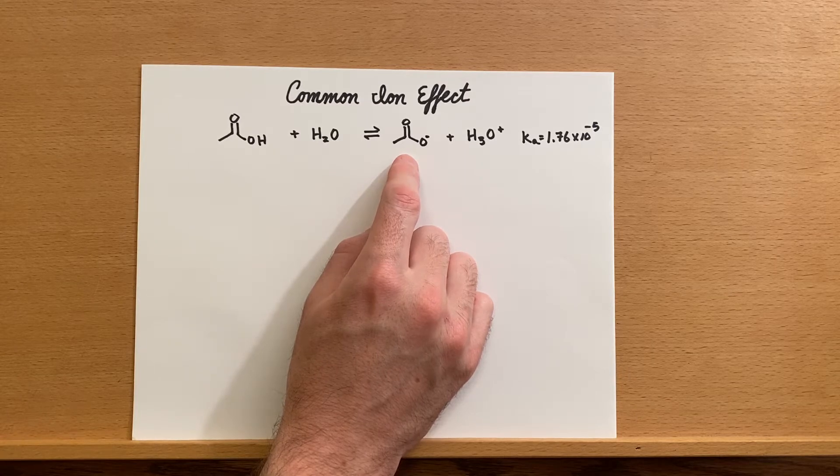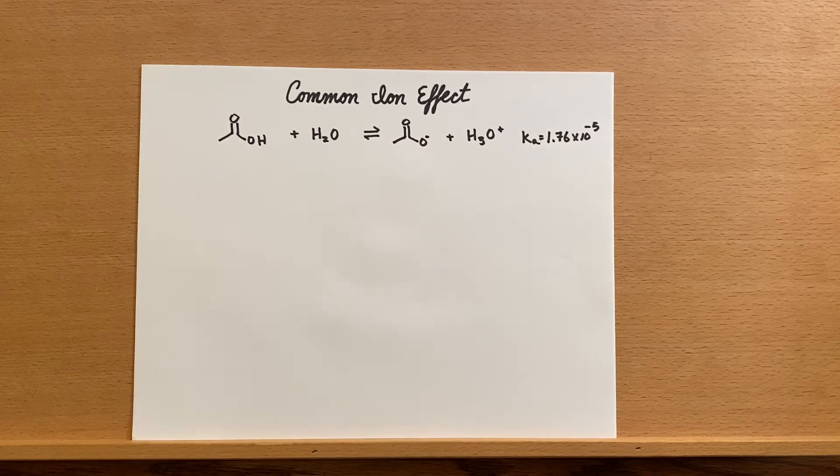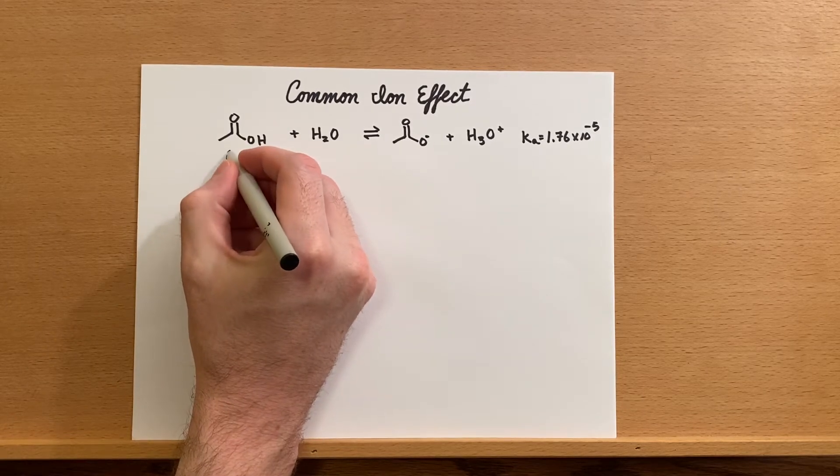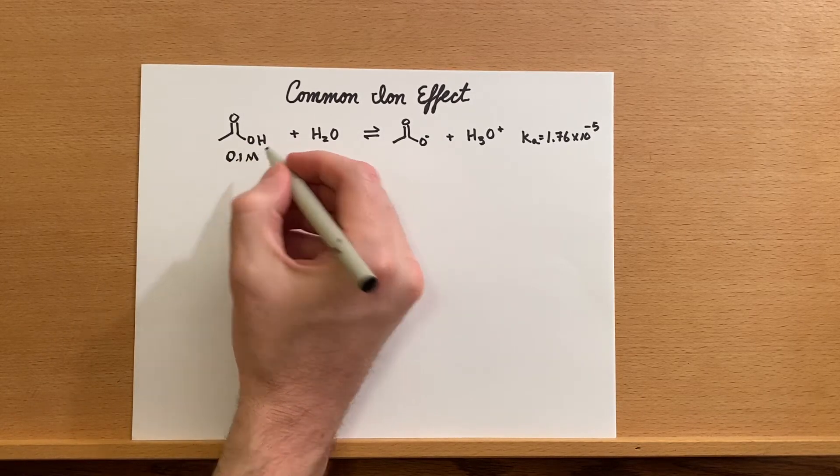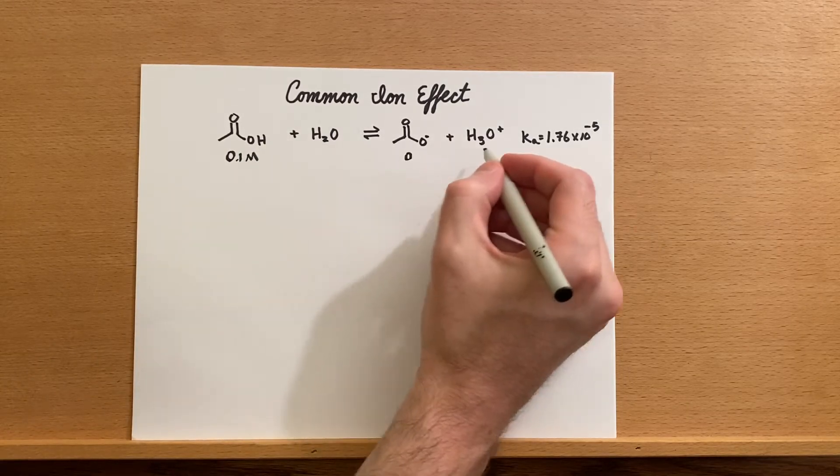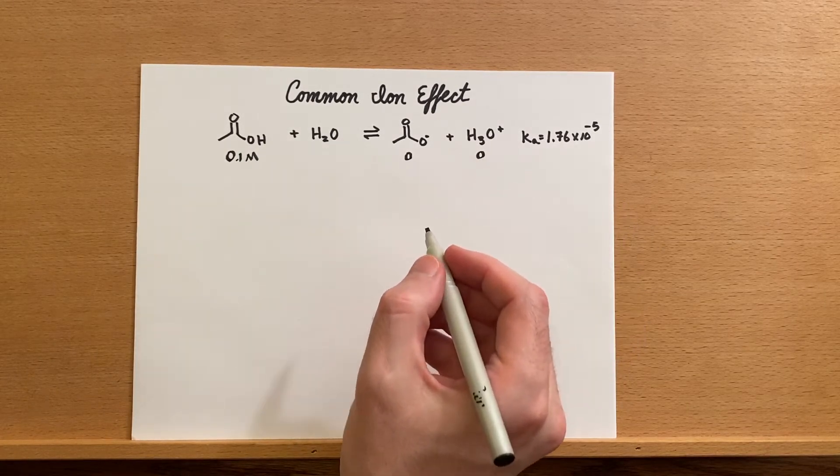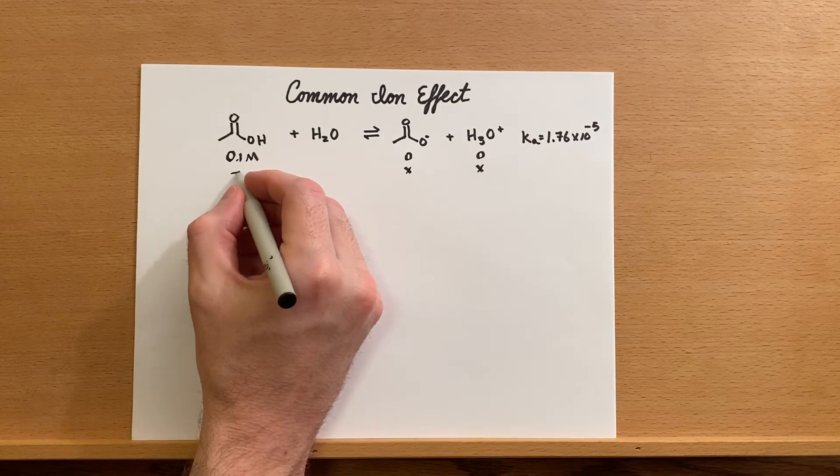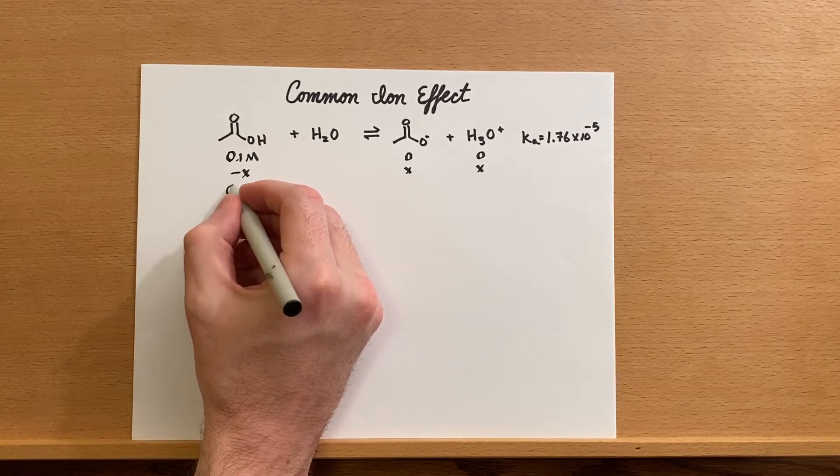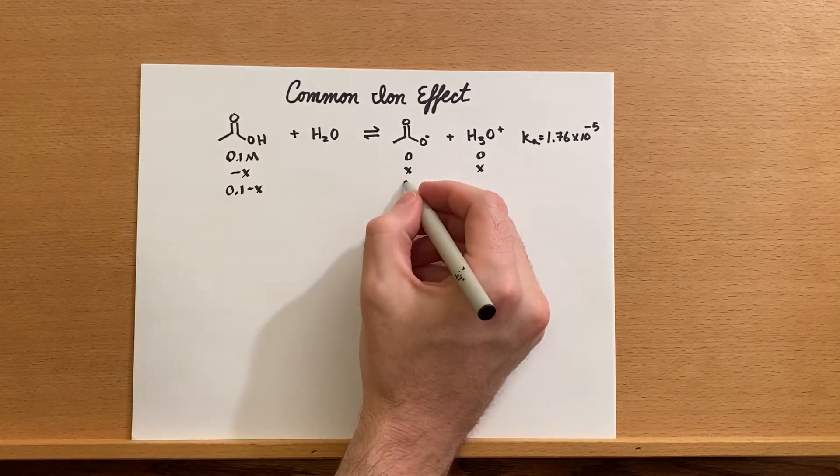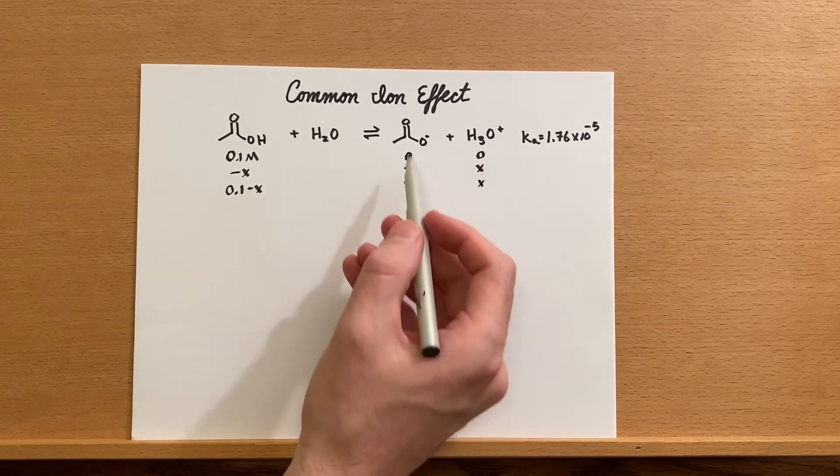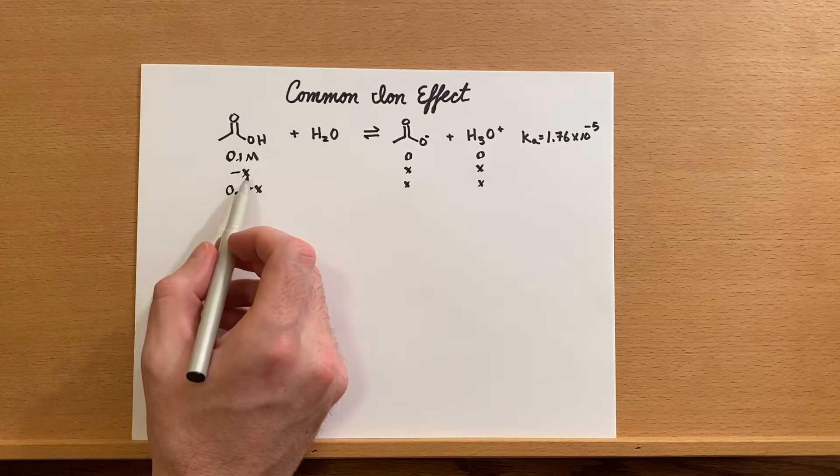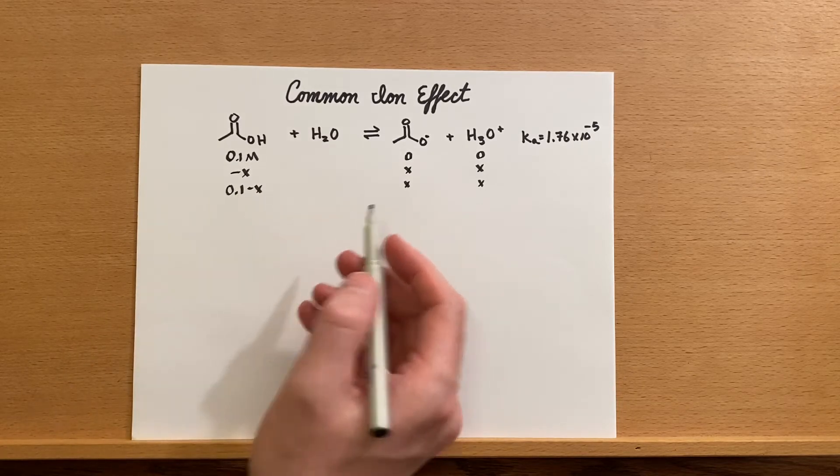Before we discuss what happens if we add this in as well, recall we have 0.1 molar of acetic acid and we don't have any of these in solution to start with. Then we'll add X amount in both cases, use up X amount of this, and this is our ICE table. 0 plus X equals X, same there, and 0.1 minus X equals 0.1 minus X, and then we plug that into our Ka expression.